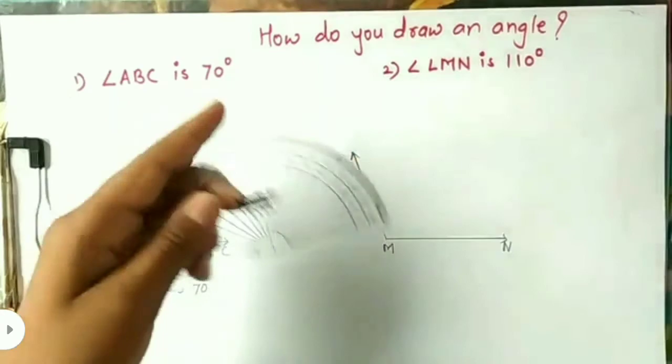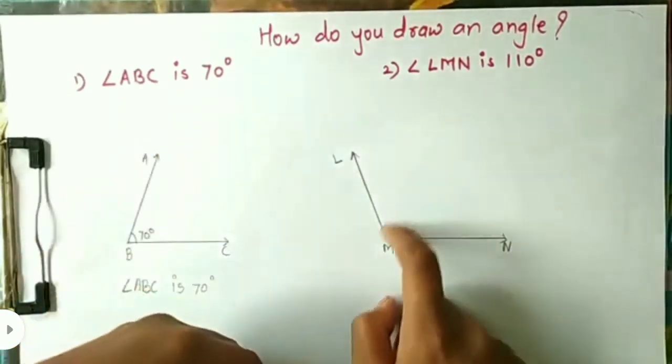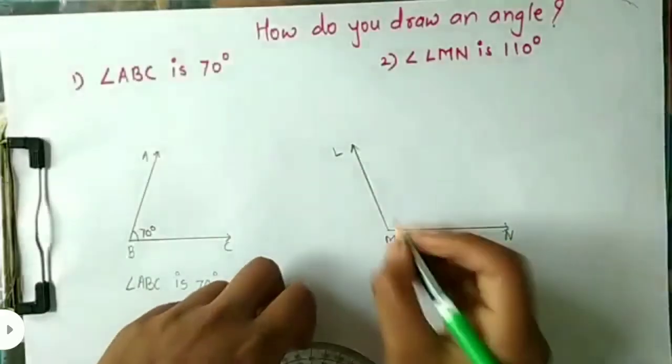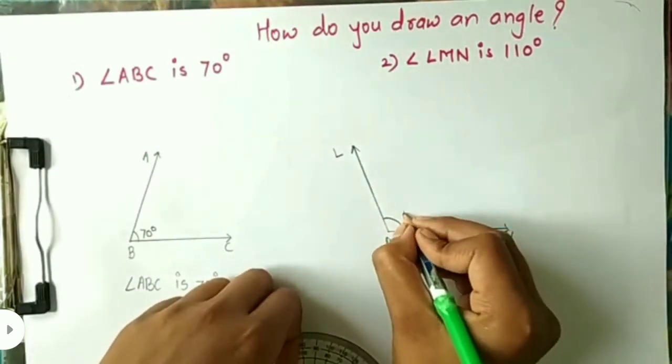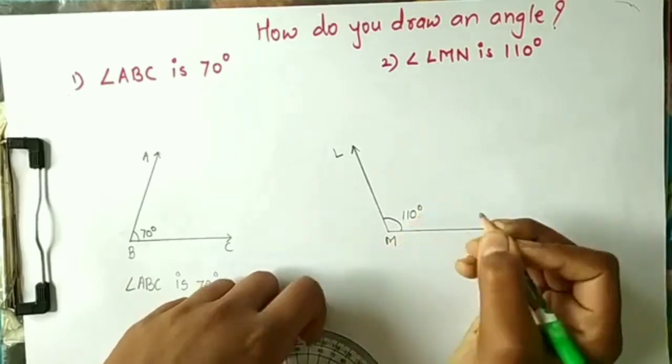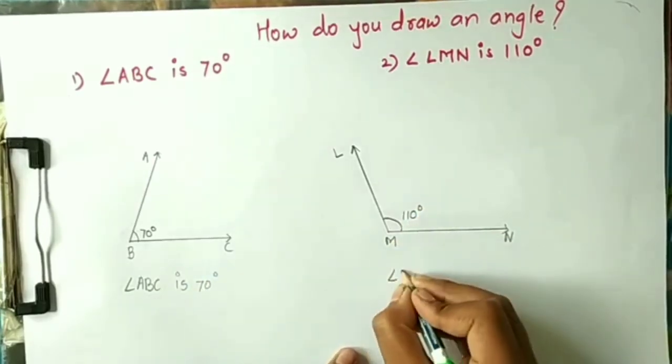Name the other end of the line L. Always mark it properly. So, your angle LMN is an angle of measure 110 degrees.